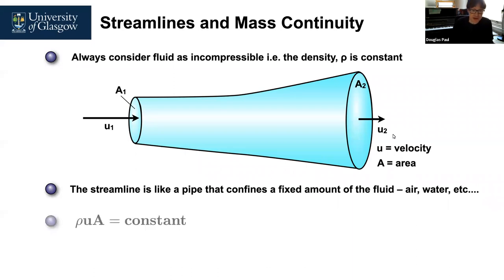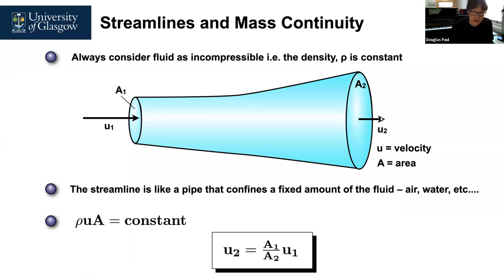A streamline is a basic concept. We have a fixed amount of air or liquid flowing through a tube. If water flows through with velocity u1 and area a1 at one end, and the area changes to a2 at the other end, there will be a different velocity coming out. From mass continuity, the velocity times the area is constant, so u2 equals (a1 divided by a2) times u1.